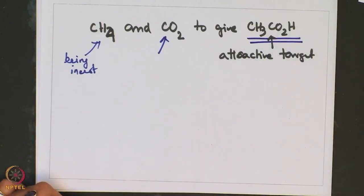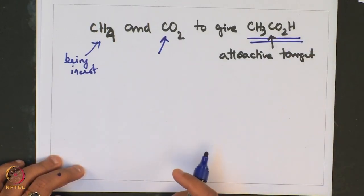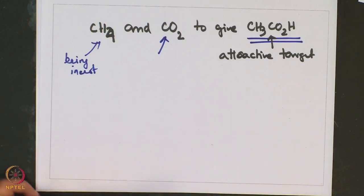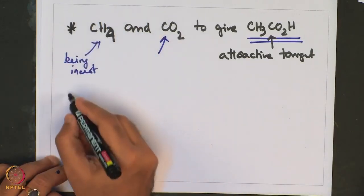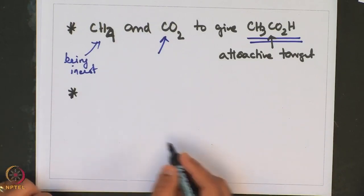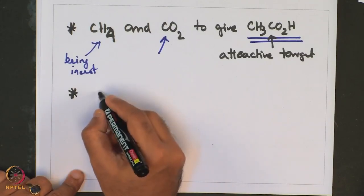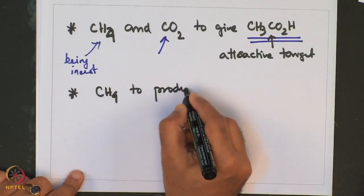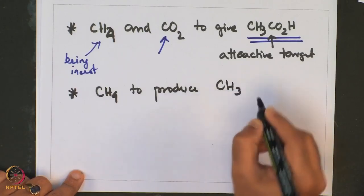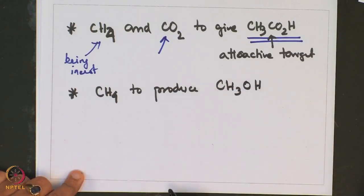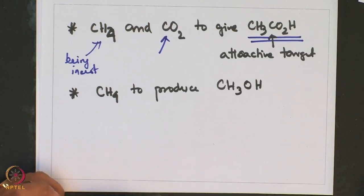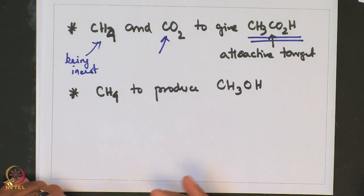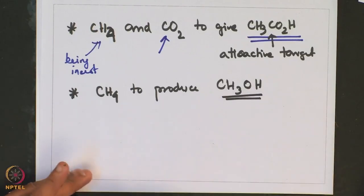These reactions can give rise to utilization of CH₄ and CO₂ to produce something useful in the form of acetic acid. Similarly, one can obtain another important compound — for example, converting CH₄ to produce methanol.